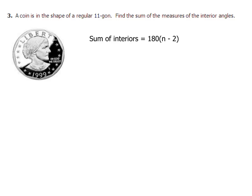For example three, we have a coin in the shape of a regular n-gon. An 11-gon is pictured on the Susan B. Anthony dollar, a U.S. coin worth one dollar — you have to be careful because vending machines sometimes mistake it for a quarter. With 11 sides, n = 11, so the sum of the interior angles is 180 times (11 minus 2). Since 11 minus 2 is 9, we get 180 times 9, which equals 1,620 degrees.